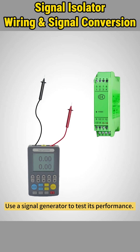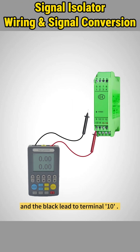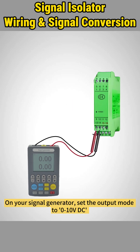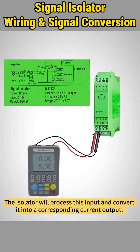Use a signal generator to test its performance. Connect the red lead from the signal generator to terminal 9 and the black lead to terminal 10. On your signal generator, set the output mode to 0 to 10V DC and configure the desired voltage level. The isolator will process this input and convert it into a corresponding current output.